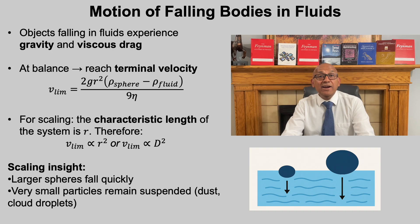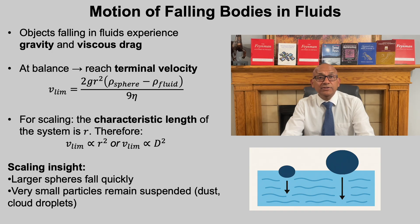This scaling gives us important physical insight: larger spheres fall much faster, while very small particles remain suspended for long periods of time. That is why raindrops fall quickly to the ground, but tiny droplets can stay afloat in clouds. It is also why fine dust and pollution particles linger in the air for hours, while larger particles settle out rapidly.